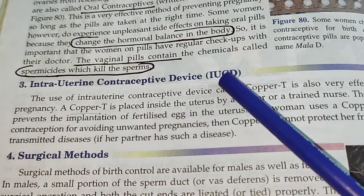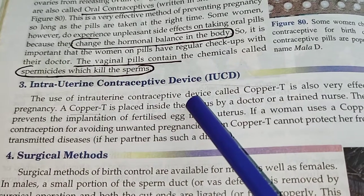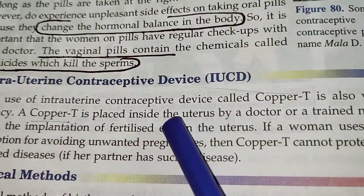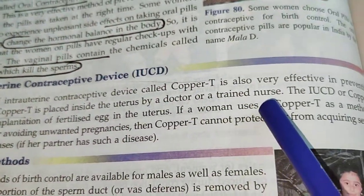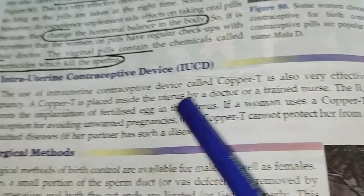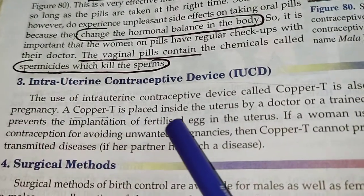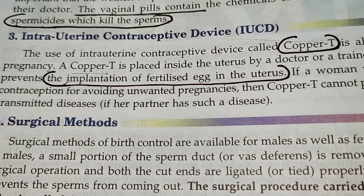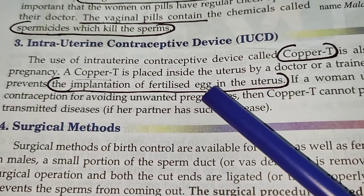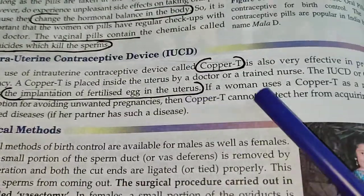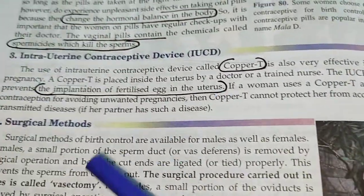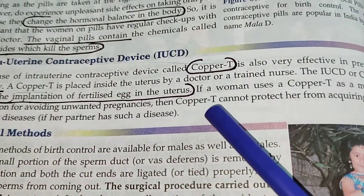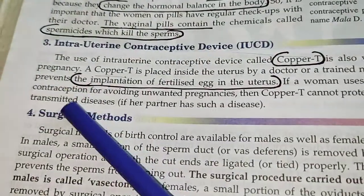Next is the use of IUCD, or intrauterine contraceptive device, popularly known as copper-T. A copper-T is placed inside the uterus by a doctor or a trained nurse. The IUCD or copper-T prevents the implantation of a fertilized egg in the uterus. If a woman uses copper-T as a method for avoiding unwanted pregnancies, it cannot protect her from acquiring sexually transmitted diseases.